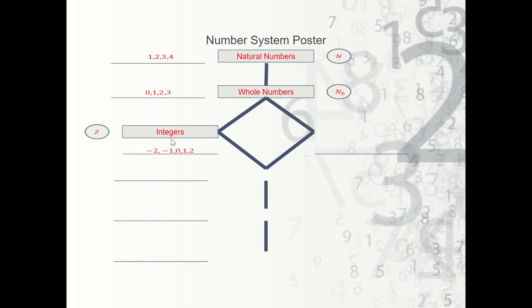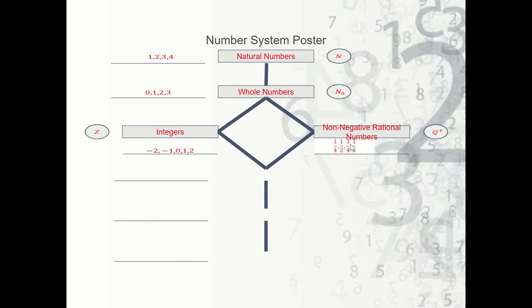After that, we learned that there are what we call non-negative rational numbers. A rational number is a fraction. So we learned there are numbers between one and two, between two and three, between three and four, etc. At first we learned that these fractions are positive — that's where the non-negative part comes in. The symbol for non-negative rational numbers is Q with a plus sign, where Q stands for rational numbers or fractions and the plus sign means positive only. Examples would be one fourth, one half, three fourths, and one over one which is one. Notice that one is included in every set.